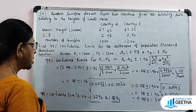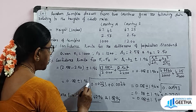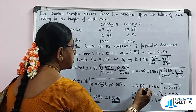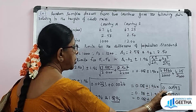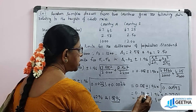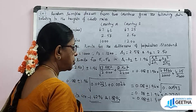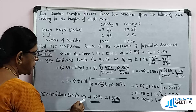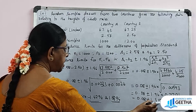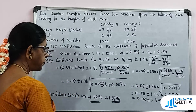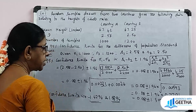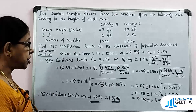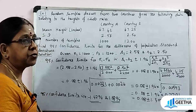This simplifies to 0.08 plus or minus 1.96 root of (6.6564/2000 plus 6.25/2400), giving 0.08 plus or minus 1.96 root of (0.003328 plus 0.002604), which equals 0.08 plus or minus 1.96 into 0.02590. This gives 0.08 plus or minus 0.05076. Therefore the 95% confidence limits for sigma1 minus sigma2 are approximately −0.0294 and 0.1308. The confidence interval for the difference between standard deviations is [−1.4294, 1.5894].